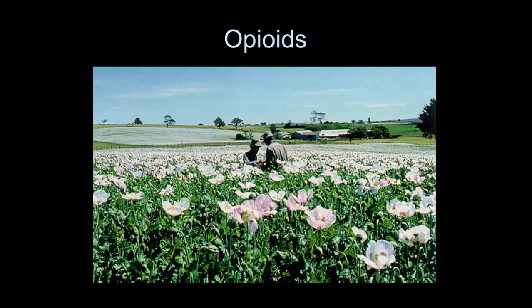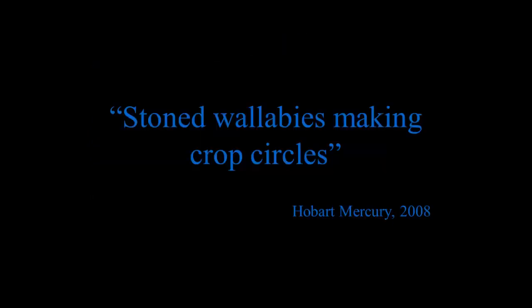These are beautiful Tasmanian poppy farms. Australia is the world's leading producer of medicinal-grade opioids. The fields are carefully ringed by electric fences to keep cows out — which led to the hilarious headline in the Hobart Mercury: 'Stoned wallabies making crop circles,' because wallabies could jump the fences, eat the poppy hips, and be affected by the opioids.